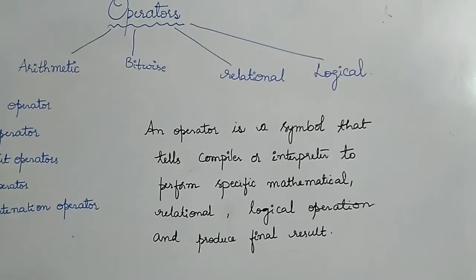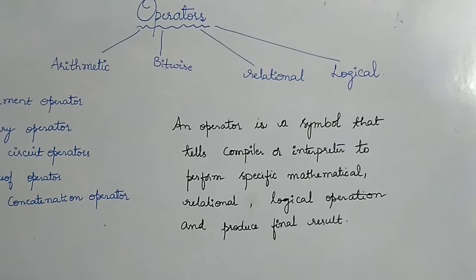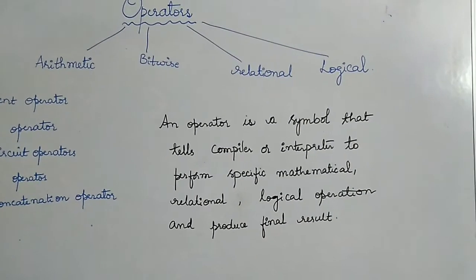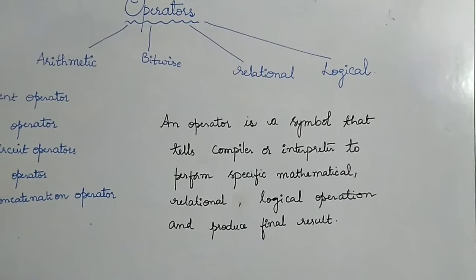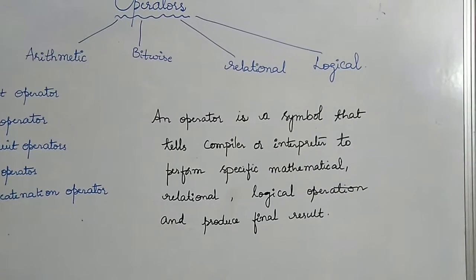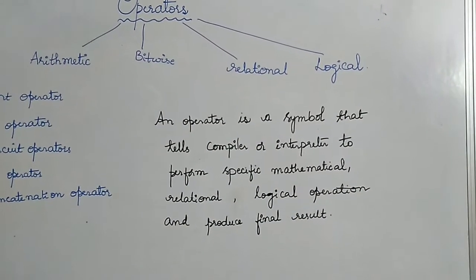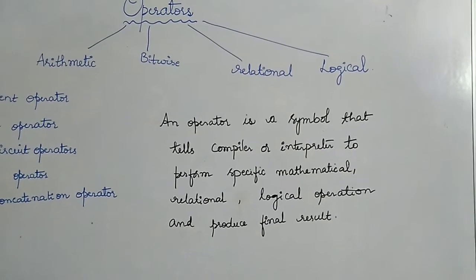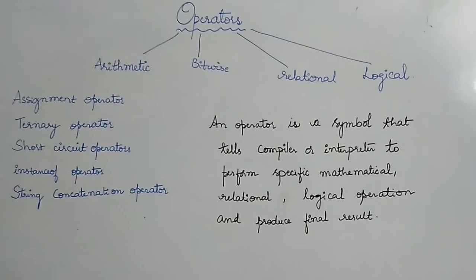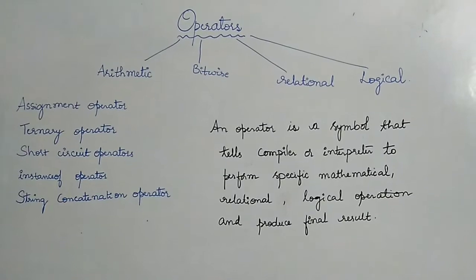Before that, let us see what is the definition of an operator. An operator in the programming language is a symbol that tells the compiler or interpreter to perform specific mathematical, relational, logical operations and produce a final result. So the operators will produce some result when we apply them on the operands.